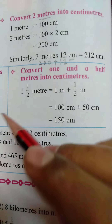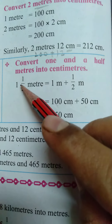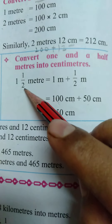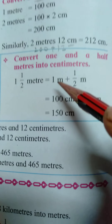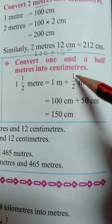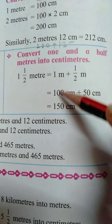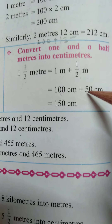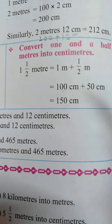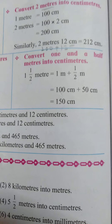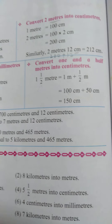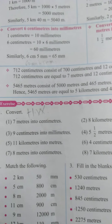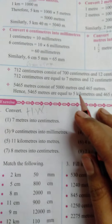Now, convert 1 and a half metres into centimetres. 1 and a half — that is 1 whole and a half. So 1 and a half metres is equal to 1 metre plus half metre. The value of 1 metre is 100 centimetres; the value of half a metre, as we did before, is 50 centimetres. So the answer is 150 centimetres. Understanding, students? Hope you are understanding. Do practice at home.